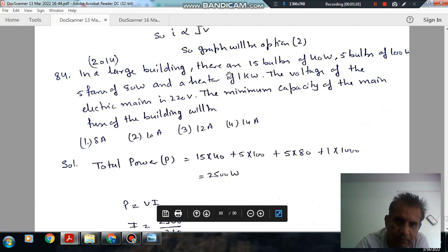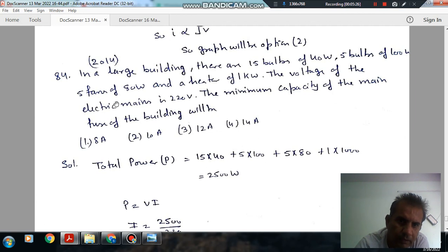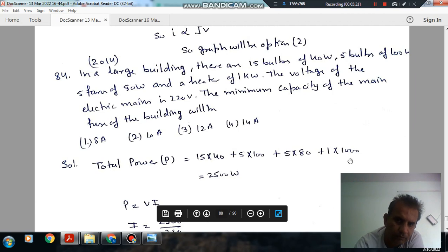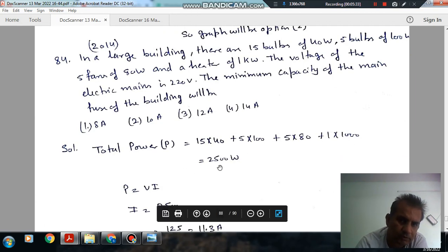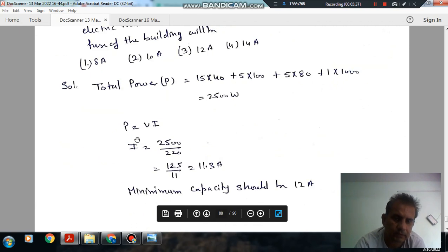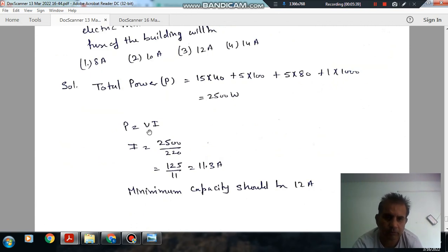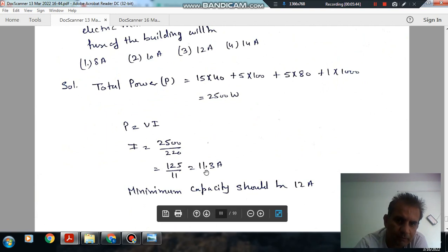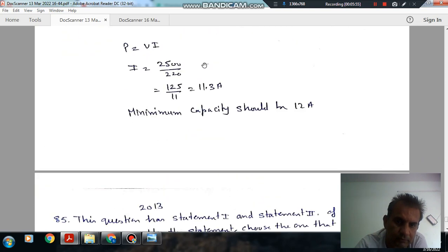So, total power is 15 bulbs of 40 Watt, so 15 into 40, and 5 bulbs of 100 Watt, 5 into 100, and 5 bulbs of 80 Watt, 5 into 80 Watt, and 1 heater of 1000 Watt. So total watt is 2500, and current is 2500 divided by voltage, 2500 divided by 220, which is 11.36 ampere. So, the minimum capacity of the fuse should be more than this, that is 12A or 13A, option C.